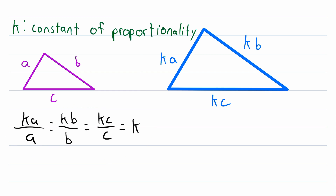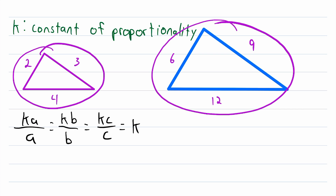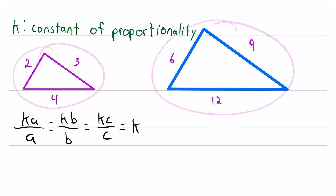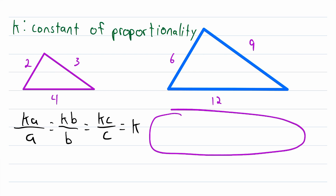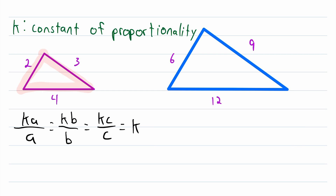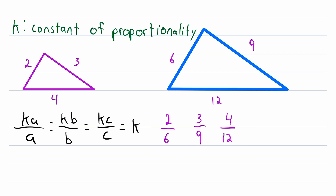Let's do a quick example to clarify these ideas. Let's say that the side lengths of this purple triangle are 2, 3, and 4, and the side lengths of the blue triangle are 6, 9, and 12. To figure out if these two triangles are similar, we can check the ratios of the corresponding sides to see if they are all equal. To know which sides correspond, we match the smallest side to the smallest side, second smallest to second smallest, and the largest to the largest. This time let's put the side lengths of the purple triangle in the numerator. So the side with length 2 corresponds to the side with length 6, the side with length 3 corresponds to the side with length 9, and the side with length 4 corresponds to the side with length 12. Indeed all of these ratios are equal.